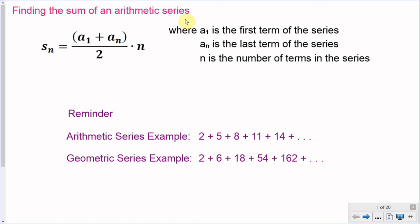In this video we'll be finding the sum of an arithmetic series. As a reminder, here are two examples: an arithmetic series and a geometric series so you can see the difference. In this arithmetic series example we have 2 plus 5 plus 8 plus 11 plus 14 and so on. You can see that we start with 2 and each subsequent term is generated by adding 3.